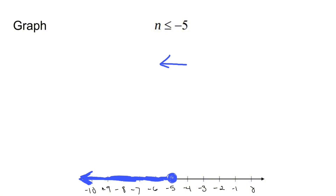What this graph means is I could take any number from negative 5 to the left — like negative 8, negative 100, negative 5.5 — and put it in here and have a true statement. Negative 7 is less than or equal to negative 5; negative 5 is less than or equal to negative 5. It's all good. And that's how you graph an inequality.